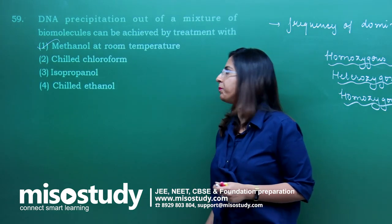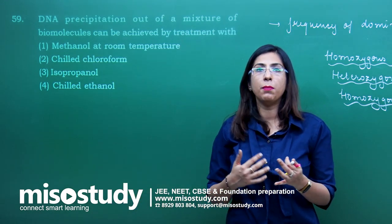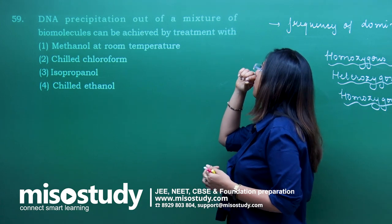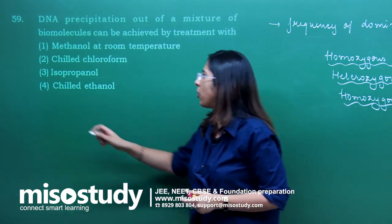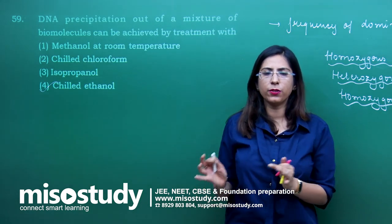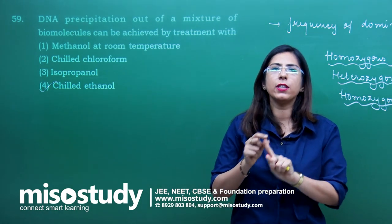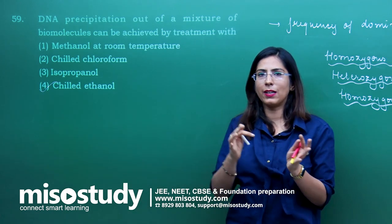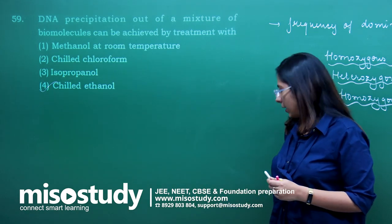Question number 59 — many questions were from the chapter on microbes and cell as a unit of life. DNA precipitation out of a mixture of biomolecules can be achieved by treatment with — again a direct question. The correct option is chilled ethanol. Chilled ethanol is used for the process of isolation. This is from the chapter biotechnology principles and processes, where the first step is isolation of DNA and the second step uses restriction enzymes. Chilled ethanol helps in the precipitation so that DNA can precipitate.